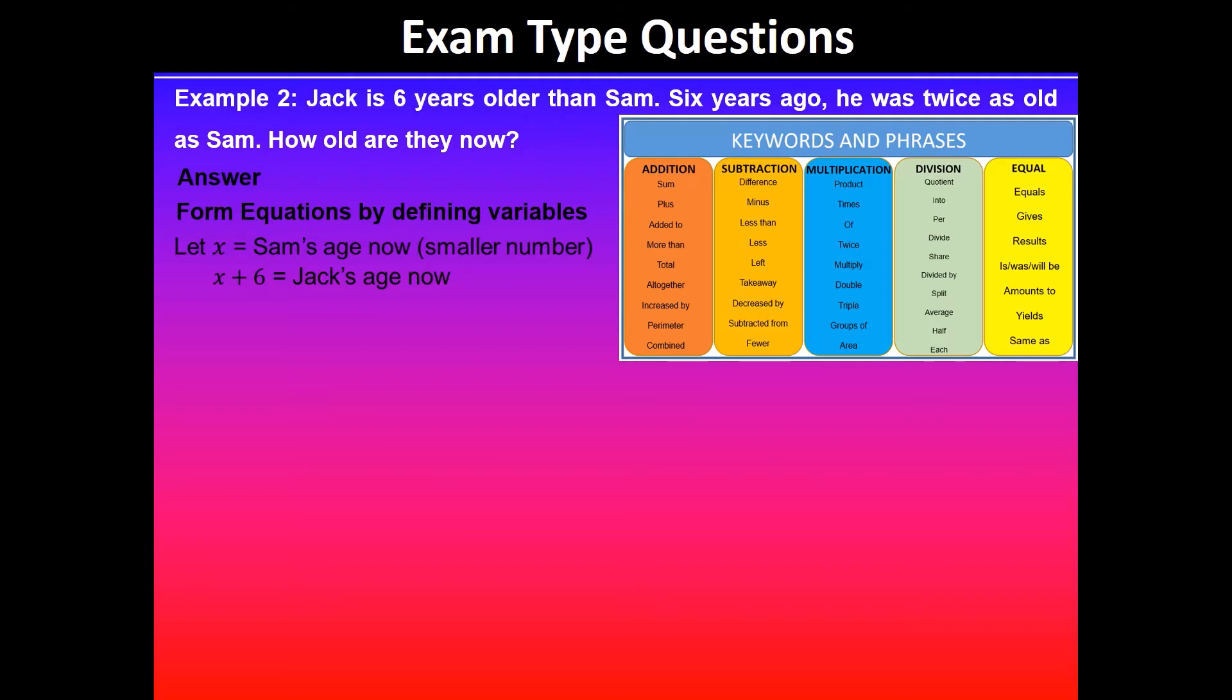So Sam's age six years ago will be given by x take away six, and likewise Jack's age who is currently x plus six, six years ago will read x plus six take away six. So that will be Jack's age six years ago, and we're given that six years ago Jack was twice as old as Sam.